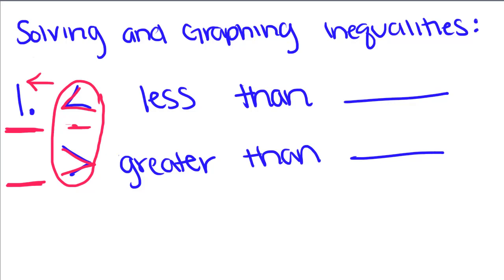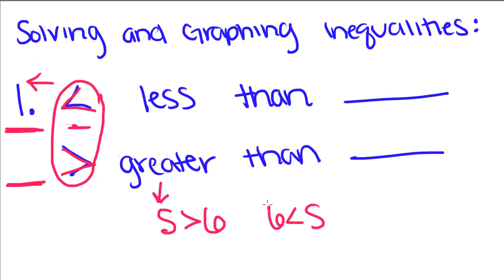Now that we know that, I'm going to show you what a basic inequality looks like. Where s is greater than 6. We always look at the inequality symbol from the variable's perspective, because we could write this as 6 is less than s, but it means that s is greater than 6. So s is greater than 6, or we could say that t is less than 7 — those are what basic inequalities look like.